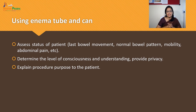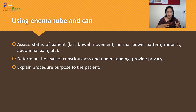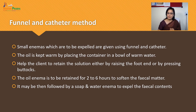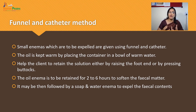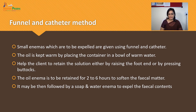The procedure requires assessing the patient's condition, considering the last bowel movement, bowel pattern, and mobility, determining the level of consciousness and understanding, and explaining the procedure to the patient. For the funnel and catheter method, small oil Enemas to be expelled are given using this method. The oil is kept warm by placing the container in a bowl of warm water, and the oil Enema is retained for two to six hours to soften the fecal matter, then followed by soap and water Enema to expel it.